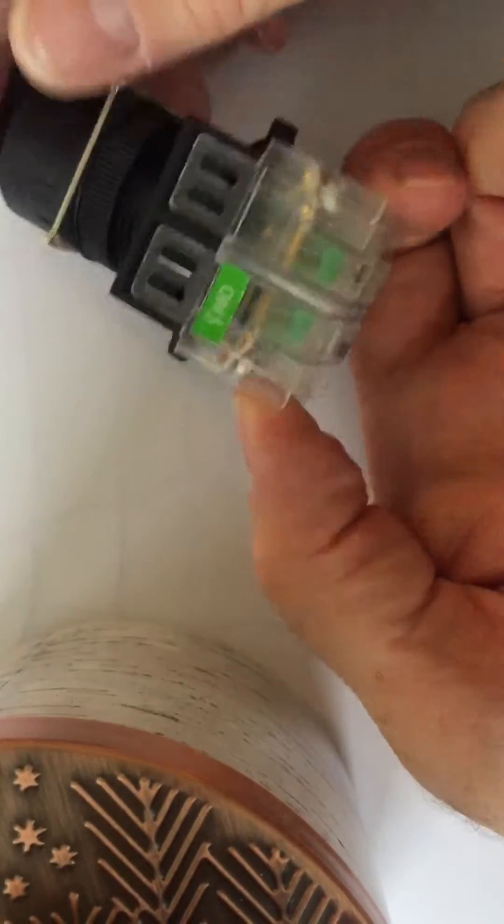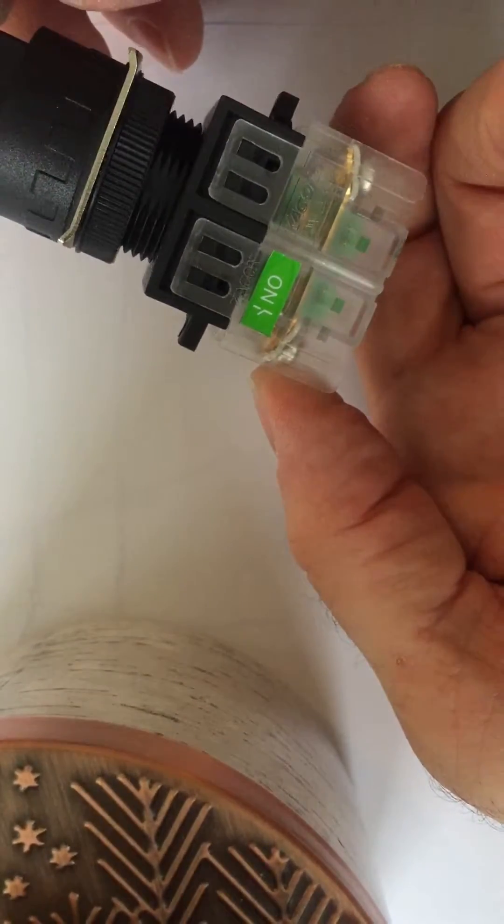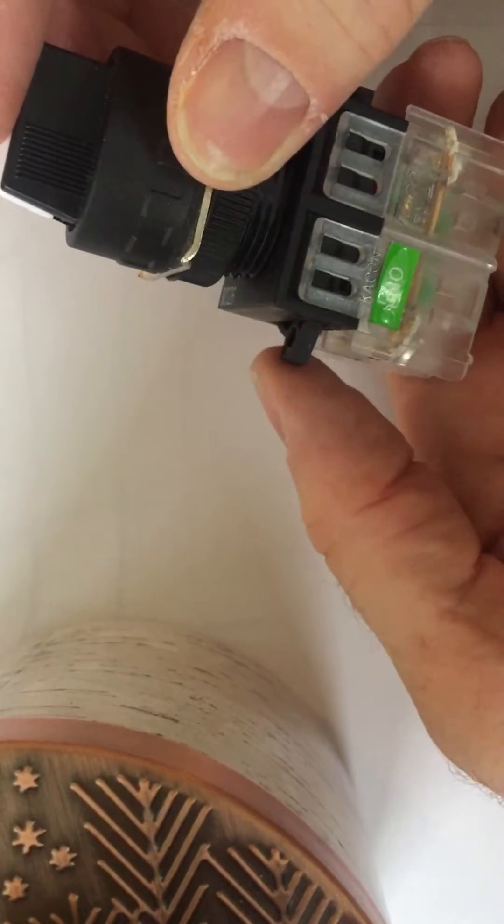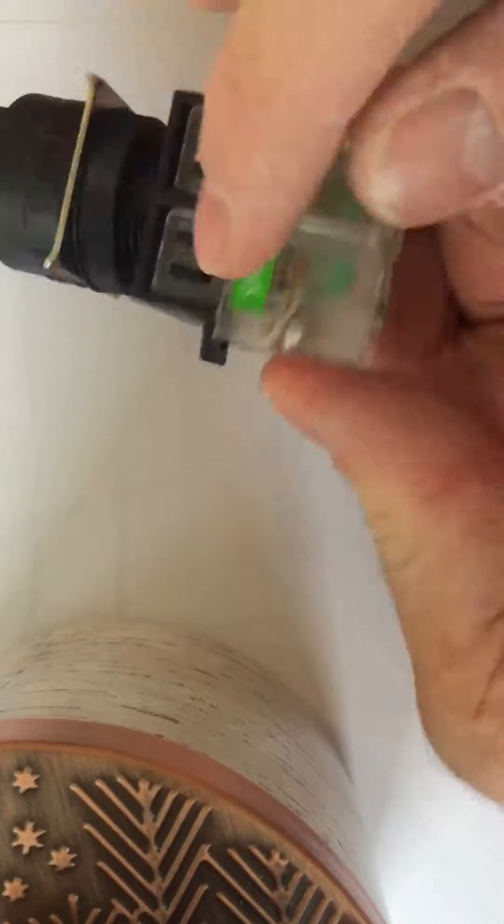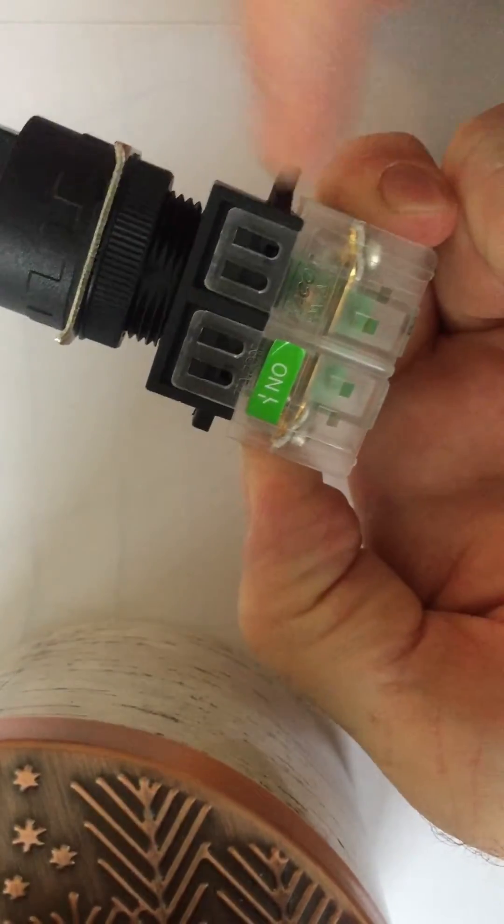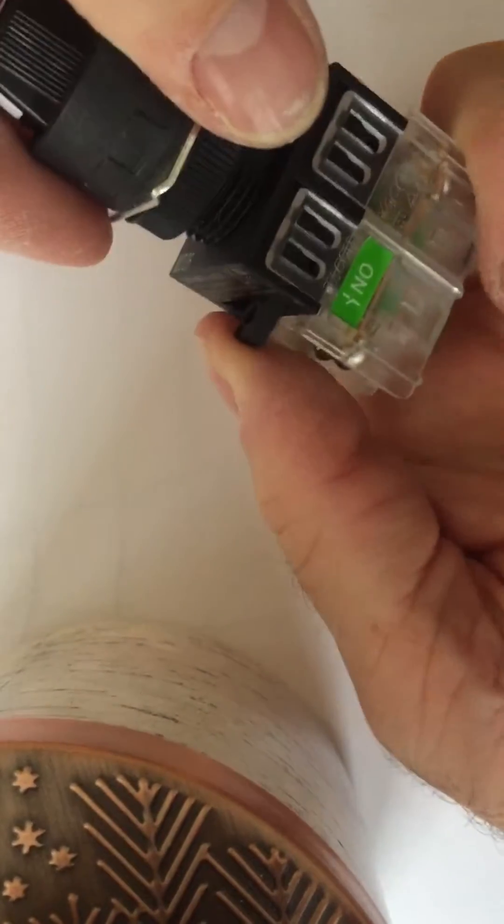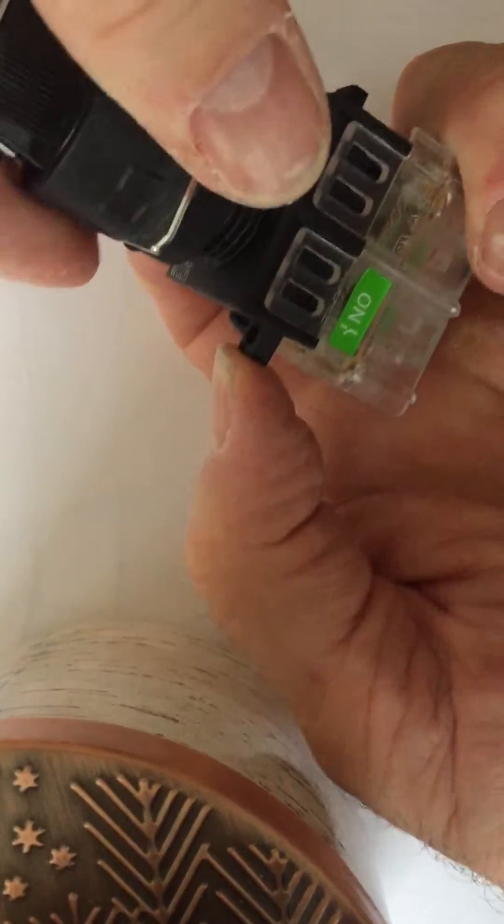In order to mount this switch to the machine, you see the little ears here on either side. You need to just push up on one or the other one. Either one because they're both attached.